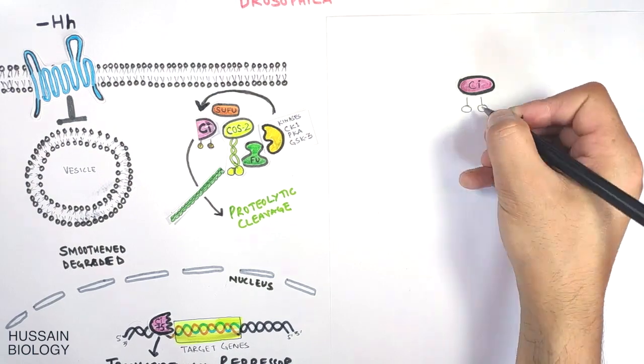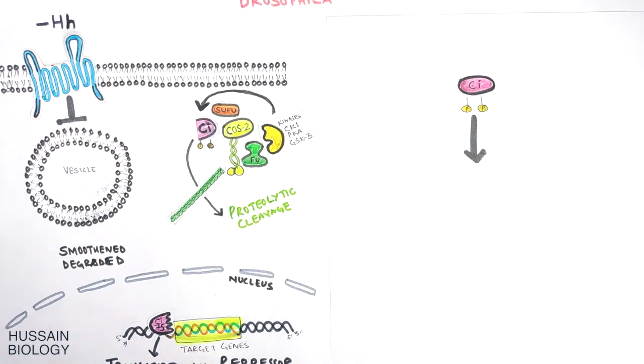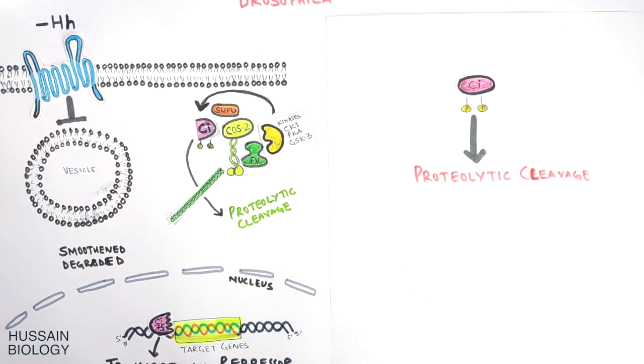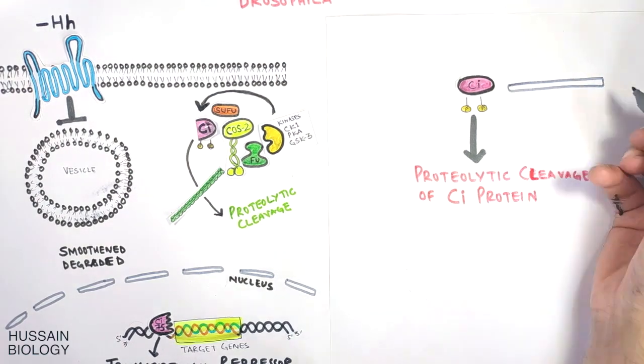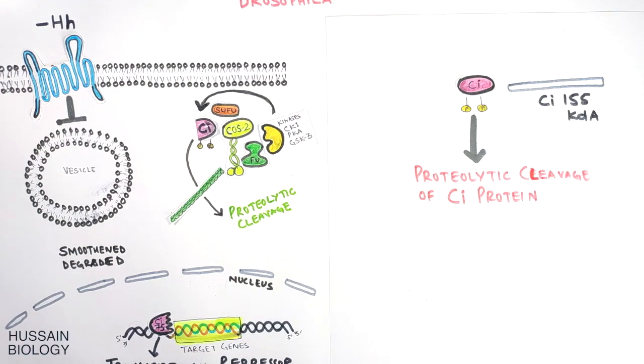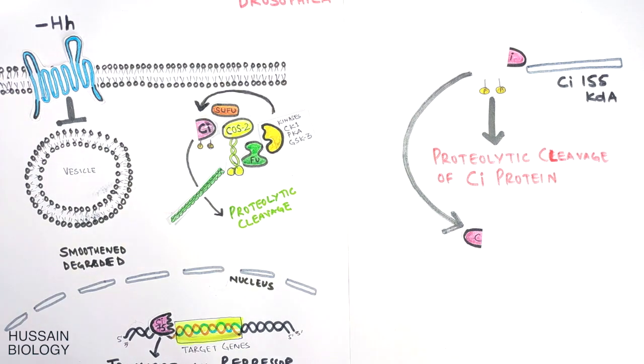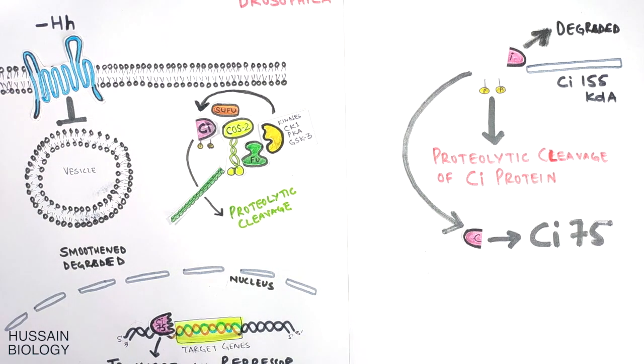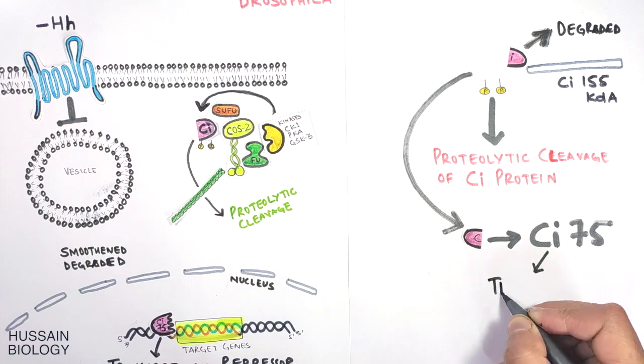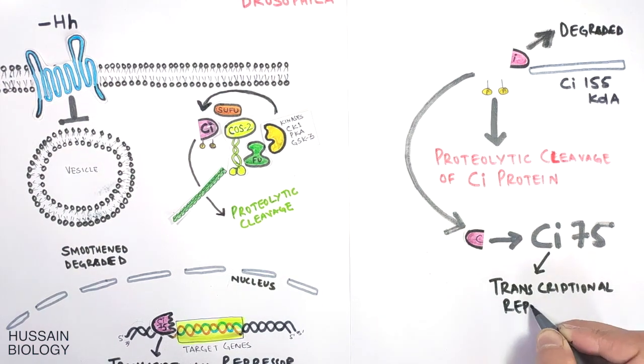If we see the Ci protein, it's first phosphorylated and then gets into the proteolytic cleavage. The Ci protein is a 155 kD protein, but when it's cleaved we get the 75 kD protein that's called Ci 75, which acts as a transcriptional repressor.